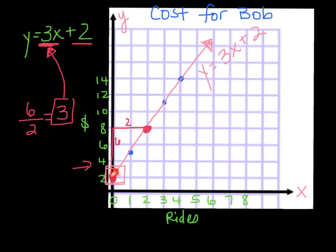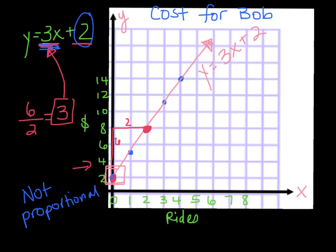This 2 is the starting amount for zero rides, and the 3 represents the slope because I went up 6 over 2, which is the same as up 3 over 1. Is this graph proportional? It's a straight line changing by 3 every time, but it adds that $2 and doesn't go through the origin. So this one is not proportional. It's not proportional because of that $2 entry fee. If it were just 3x it would be proportional, but we didn't go through the origin.